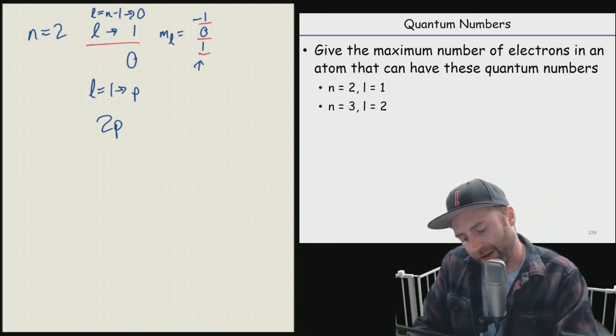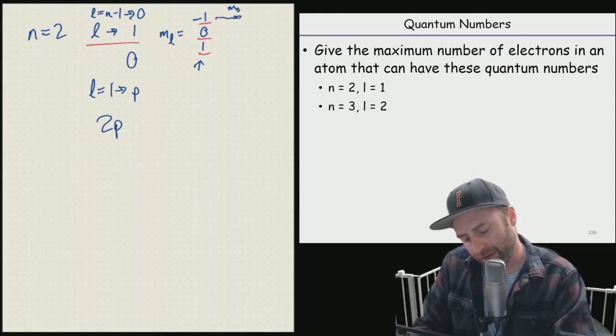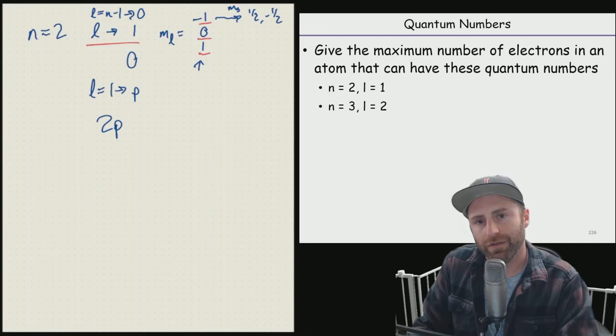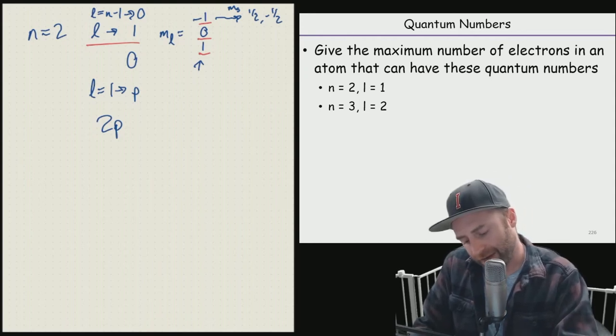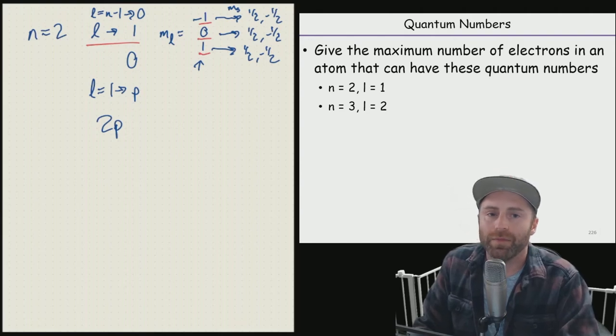This is where M sub S comes into play. With our M sub S value, we can have M sub S that's always equaling one half or negative one half. And specifically every single one of our individual orbitals, so the negative one, the zero and the one, every single one of them can have an M sub S value equaling one half or negative one half. The one can have one half or a negative one half. So now we have all of our possible M sub S values.